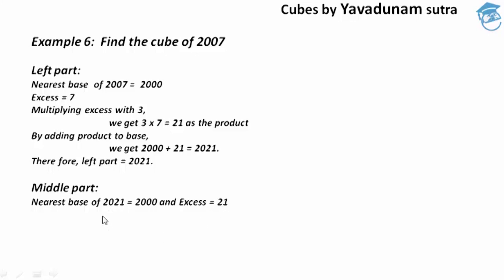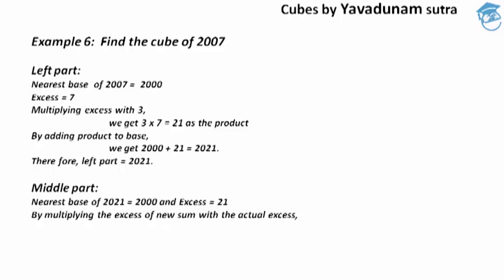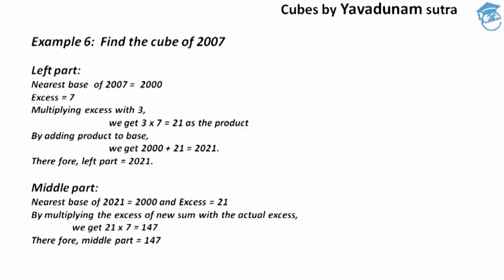After finding the nearest base and excess, moving to step number 2. We have to multiply the excess of the new sum with the actual excess. The new excess is 21 and the actual excess is 7. By multiplying 21 by 7, we get 147. This product 147 is regarded as the required middle part.